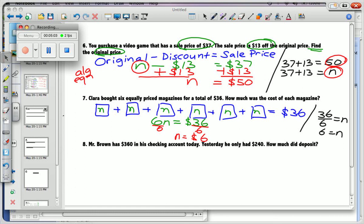Okay. Mr. Brown has $360 in his checking account today. Yesterday, he only had $240. How much did he deposit? So yesterday was $240. What happened to this $240? We added some more to it. And now he's at $360.